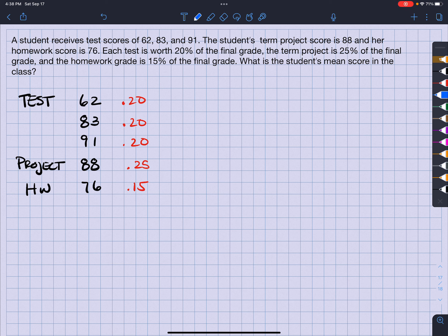So now what I'm going to do is actually multiply these here. All right, so let's see. So we have 62 times 0.2, which is going to give me 12.4. 83 times 0.2 is going to give me 16.6. 91 times 0.2 is going to give me 18.2. 88 times 0.25 is going to give me 22. And 76 times 0.15 is going to give me 11.4.